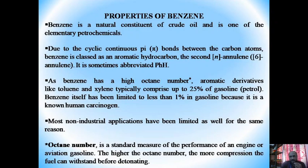As Benzene has a higher octane number, aromatic derivatives like toluene and xylene typically comprise up to 25% of gasoline — that is, petrol. Benzene itself is limited to less than 1% in gasoline because it is a known human carcinogen. Most non-industrial applications have been limited as well for the same reason. In summary, Benzene has a high octane number.